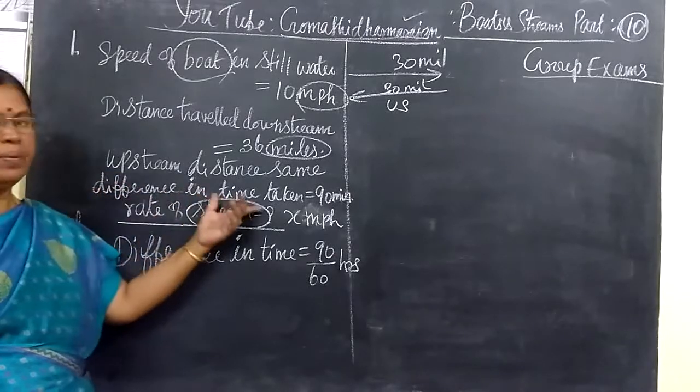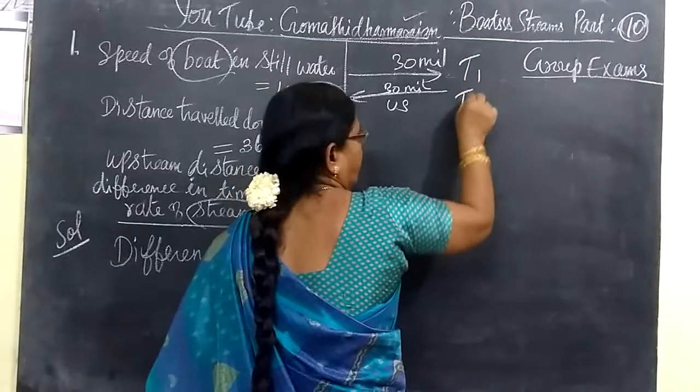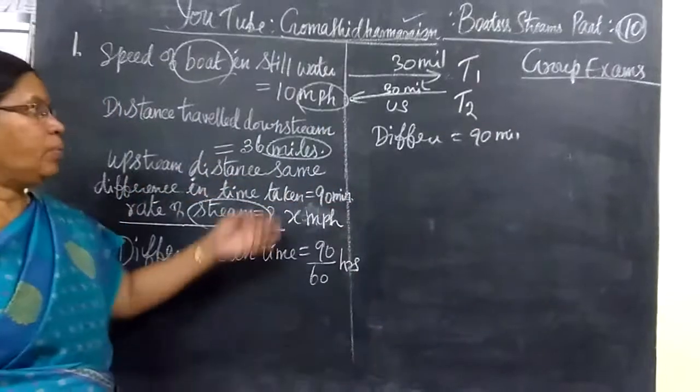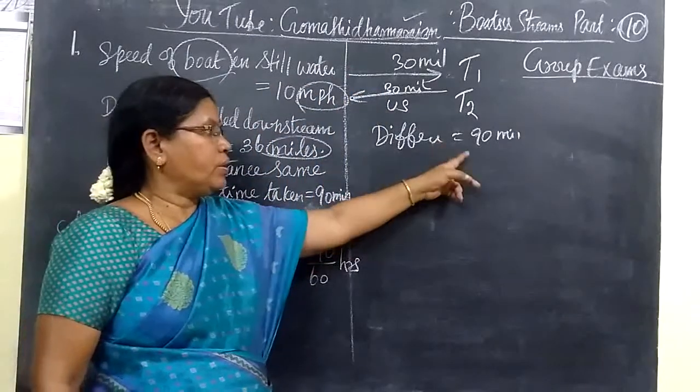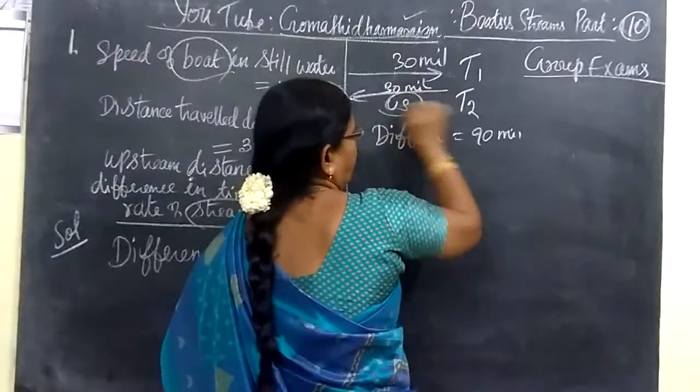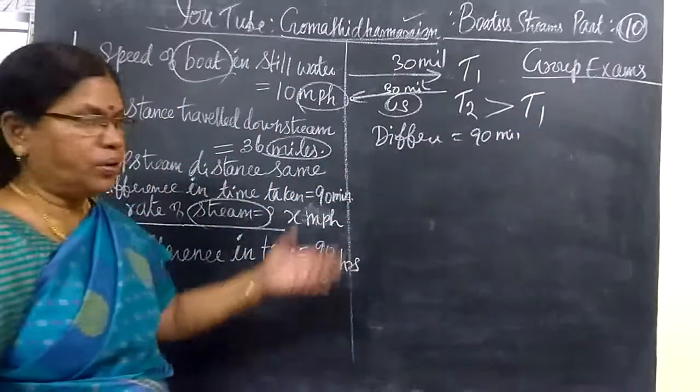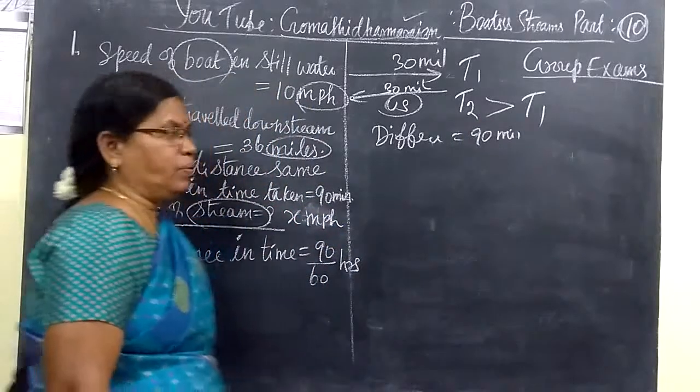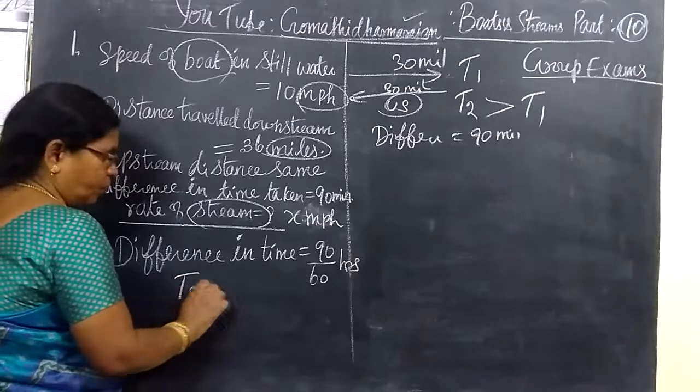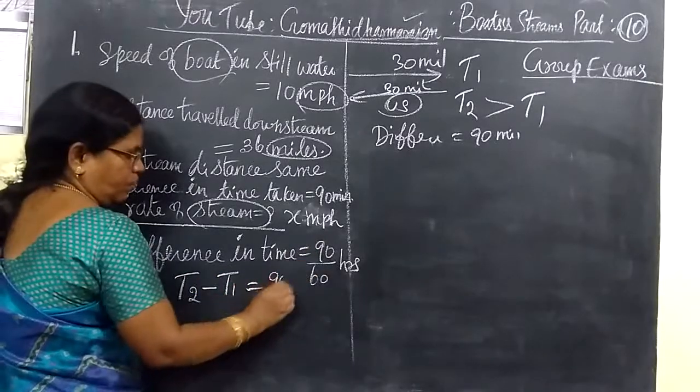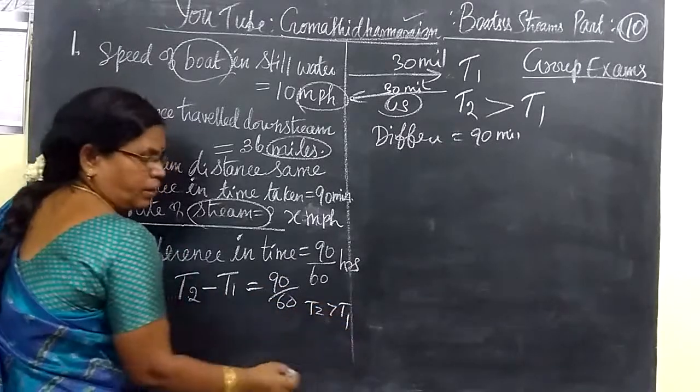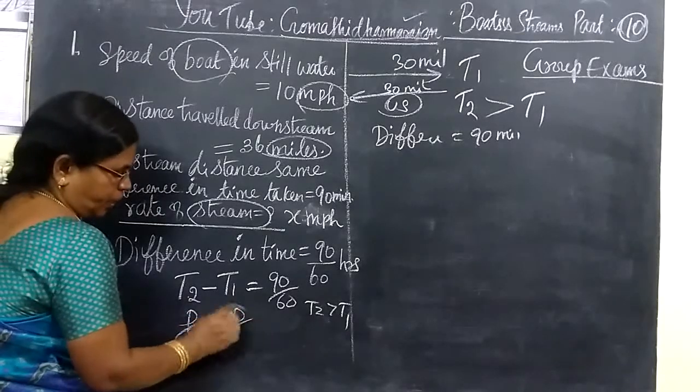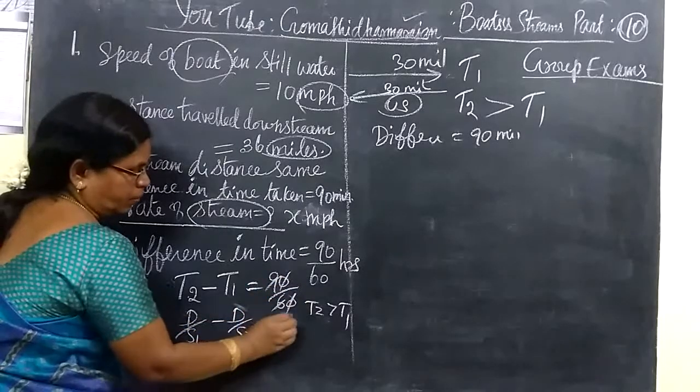And the difference in time taken. The difference in time taken between upstream and downstream. The difference is 90 minutes. Time taken for upstream and time taken for downstream, the difference is 90 minutes. So, T2 will be greater than T1. You have to take greater value and write it first. So, time equals distance by speed. T2 minus T1 equals 90 by 60, which is 3 by 2.